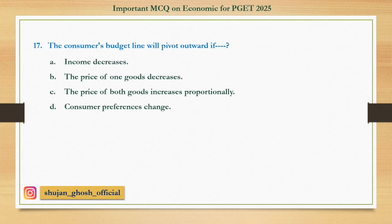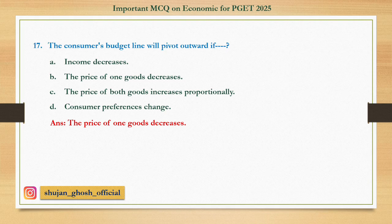Question number seventeen: The consumer's budget line will pivot upward if — option A: income decreases; B: the price of one good decreases; C: the price of both goods increases proportionally; D: consumer preferences change. Answer: the price of one good decreases.